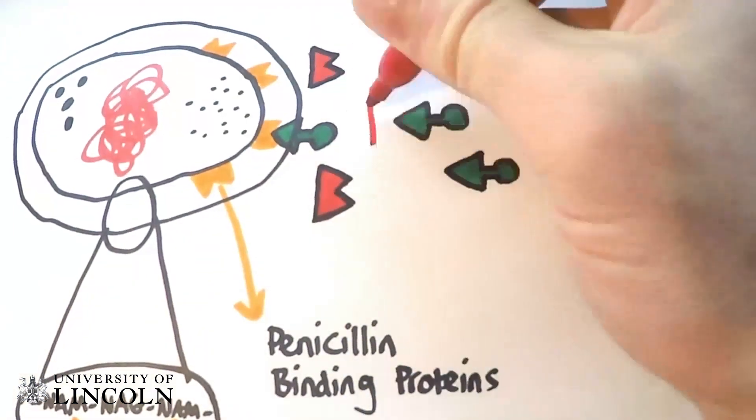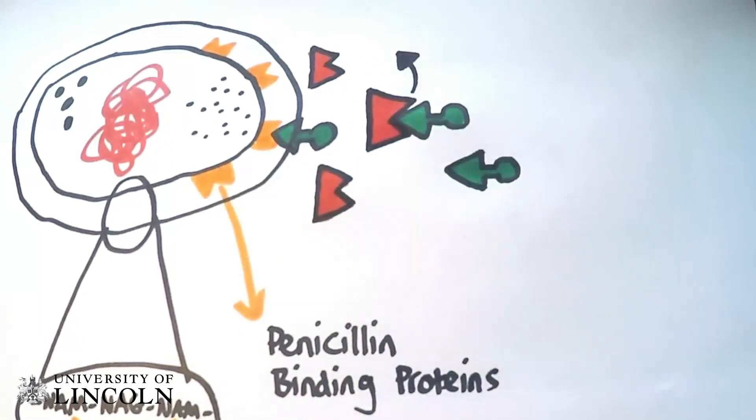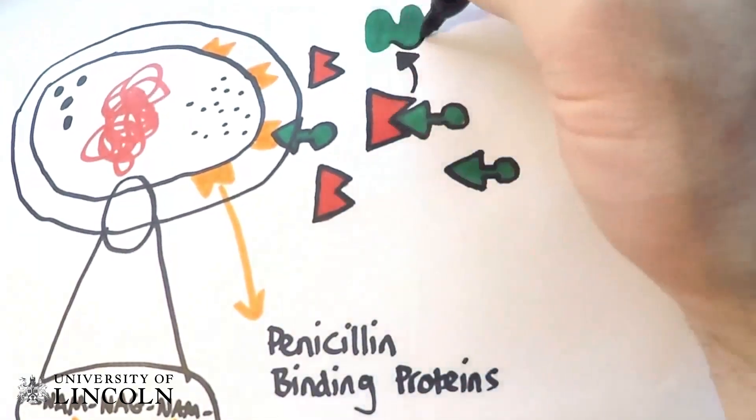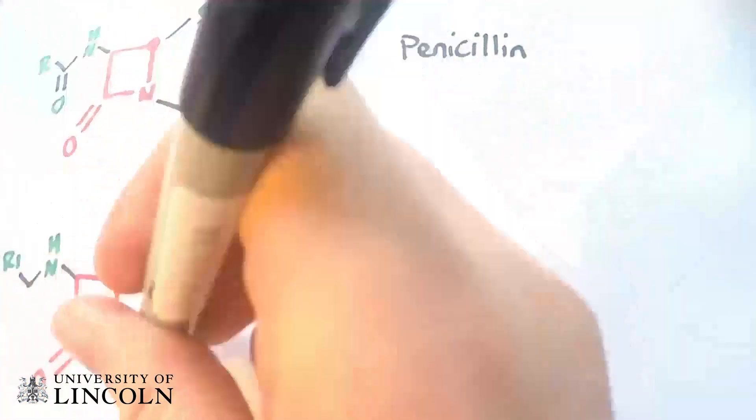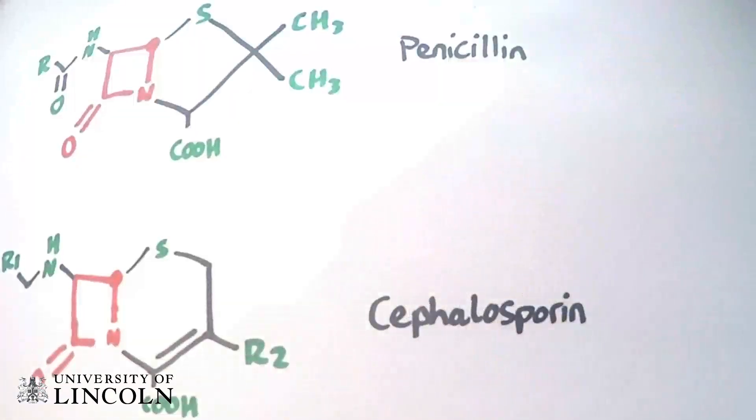However, beta-lactamases inactivate the antibiotic, preventing binding and thus allowing bacteria to resist the antibiotic. All beta-lactam antibiotics share the beta-lactam ring, the red structure shown here in penicillin and cephalosporin.